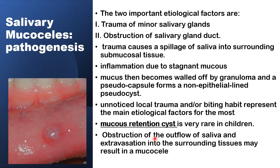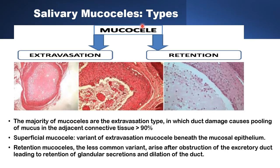Obstruction of the outflow of saliva from the minor salivary gland, followed by extravasation into the surrounding tissue, results in a cyst lined by epithelium, forming a mucus retention cyst. So these are the two types of salivary mucoceles. The common extravasation type is due to spillage of saliva outside the minor salivary gland from injury to the duct or the gland itself. The spilled saliva excites an inflammatory reaction and is walled off by granulation tissue with inflammatory cells and even giant cells. There will be no epithelial lining — just a pseudocyst.